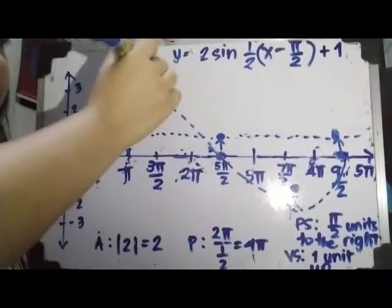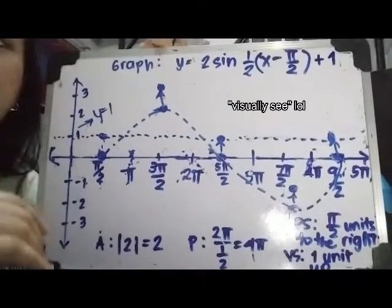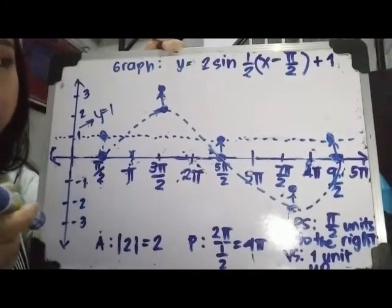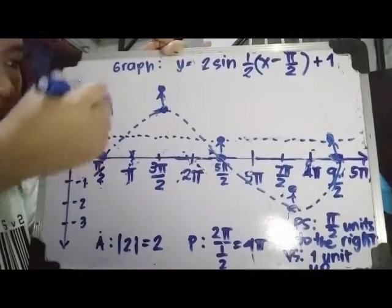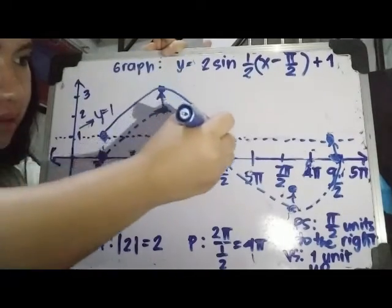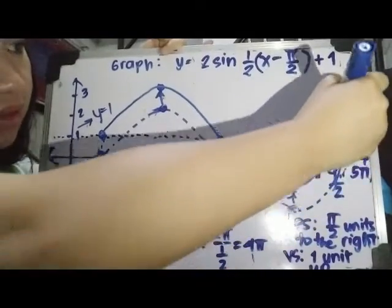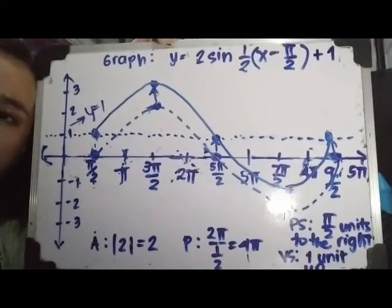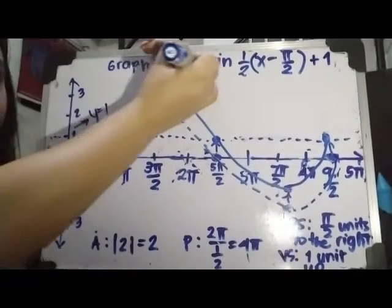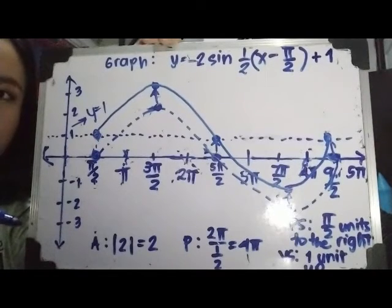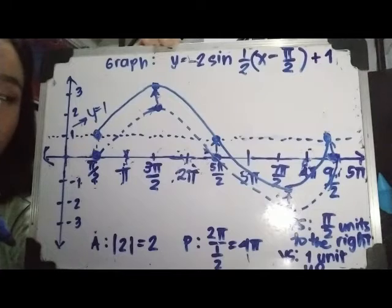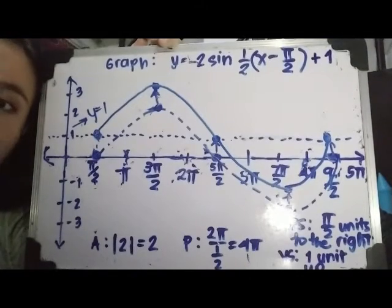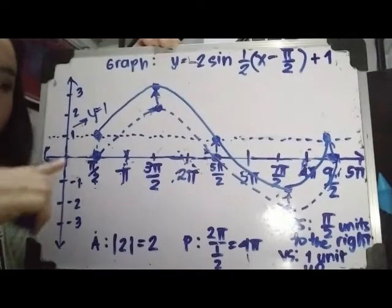I'm drawing these arrows so that you can visually see there will be a vertical movement. From this point, we go up here; the next point is there. These are the new set of points we're going to graph. Let's connect the dots. The solid graph is the graph of y equals 2 sine one-half x minus π over 2 plus 1. Now, what if there is a negative sign? We know that our graph will be reflected across the x-axis for the parent function. But in this case, since we already have a vertical shift, it will be reflected across our new center line.